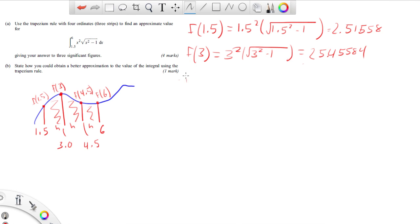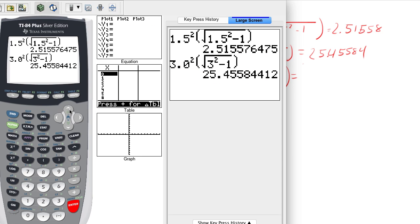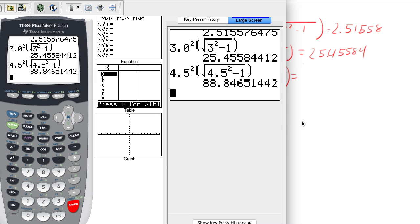Next up is f of 4.5. So that's going to be 4.5 squared, brackets, 4.5 squared minus 1, all underneath the square root sign. And again, if your calculator will do this, which I believe the Casios will, just scroll over, replace the 3 with the 4.5. 88.84651.